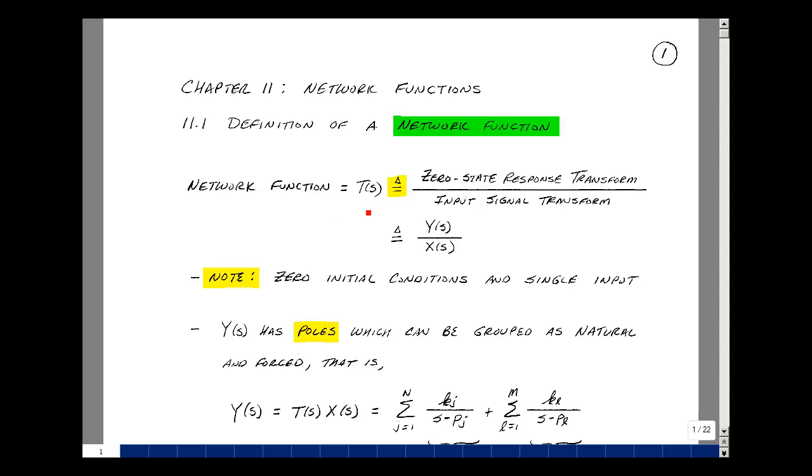Let's define a network function T(s) in the following way: as the ratio of the zero-state response transform to the input signal transform. Symbolically, we'll say this is Y(s) divided by X(s). The numerator implies that we have zero initial conditions, and the denominator implies that we have a single input.